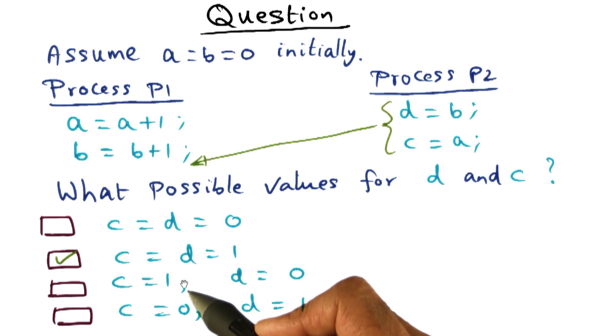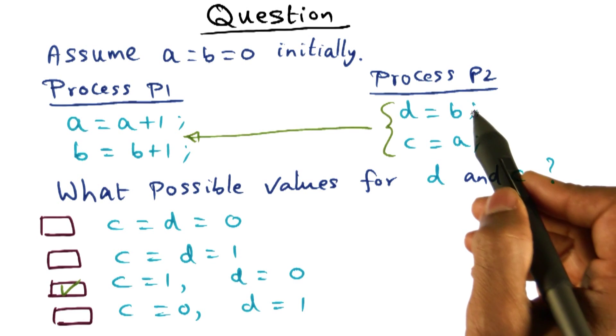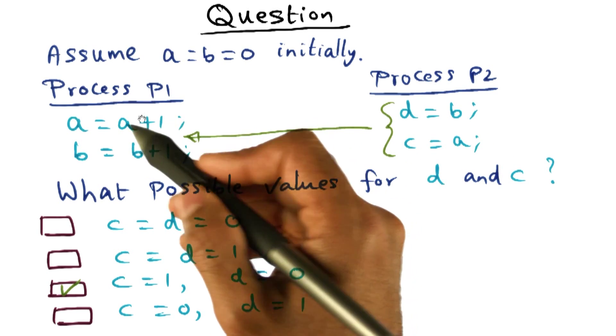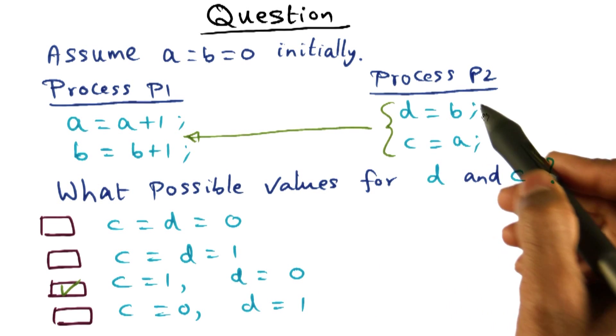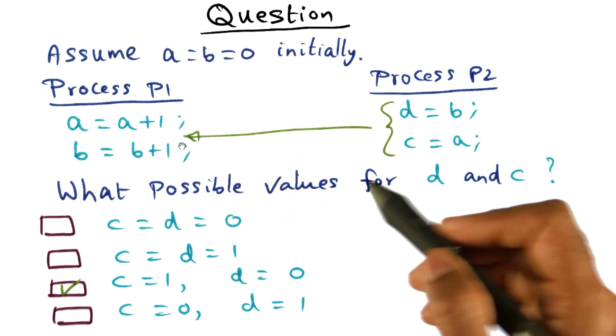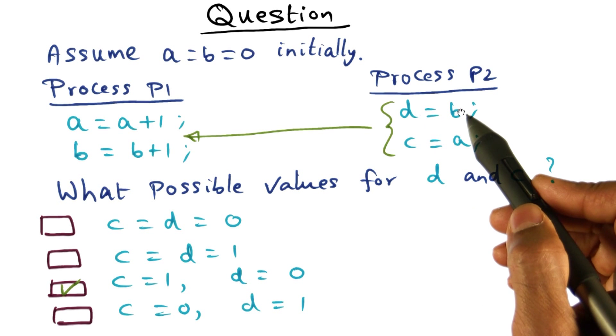Let's see if the third possibility can happen. The third possibility, for it to happen, it is conceivable that we insert these two instructions in the middle of this. In other words, process P1 executed this instruction and, in time order, it so happens that these two instructions got executed, and then this instruction got executed. And therefore, what you get into D is the old value of B, that is 0.